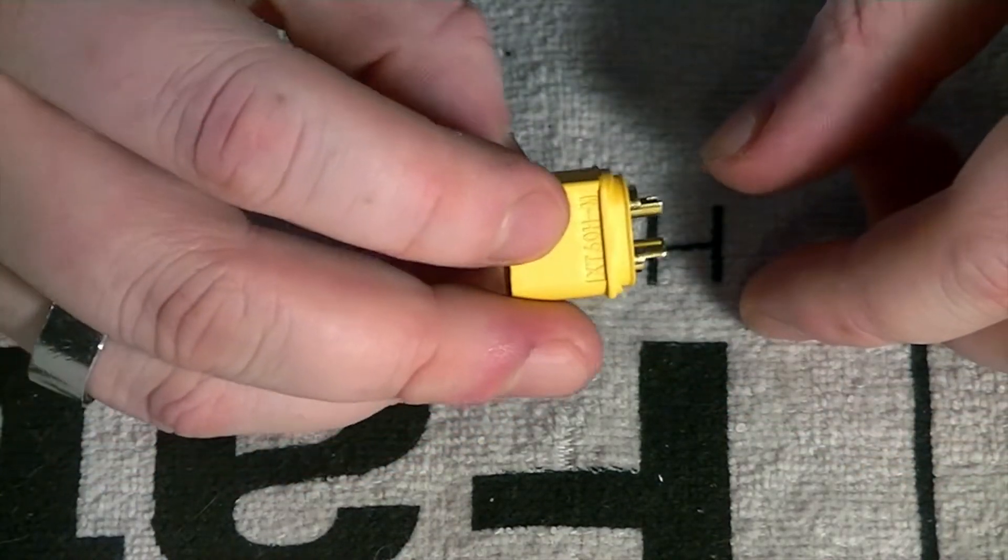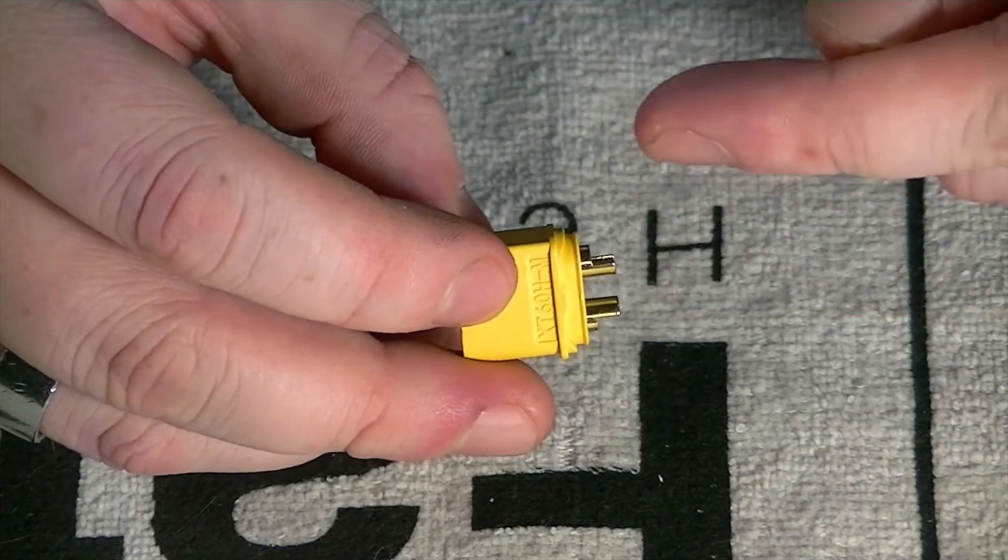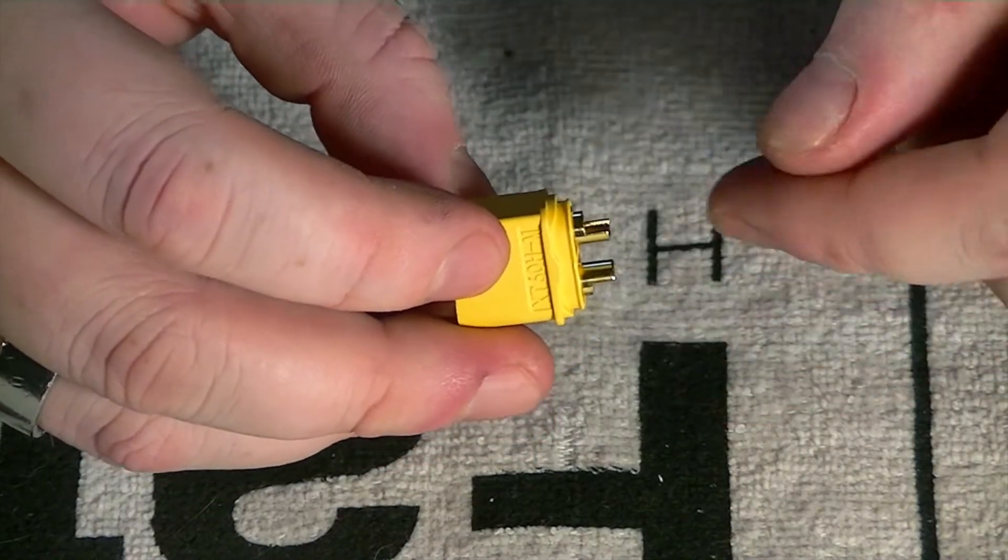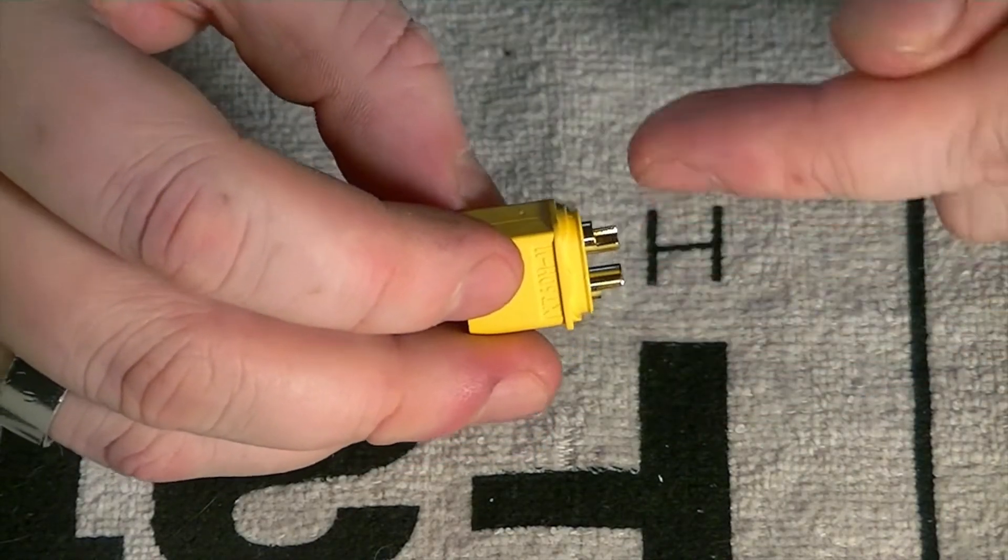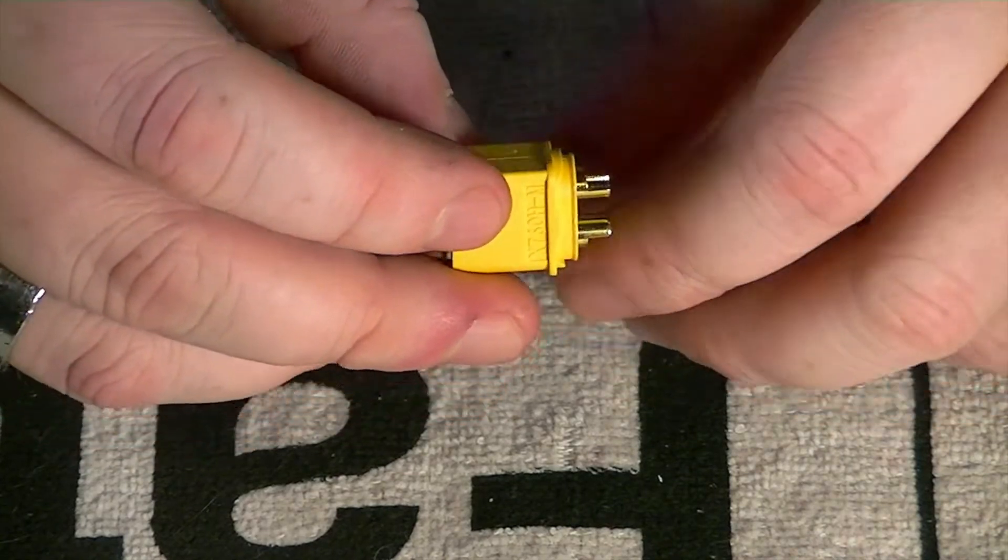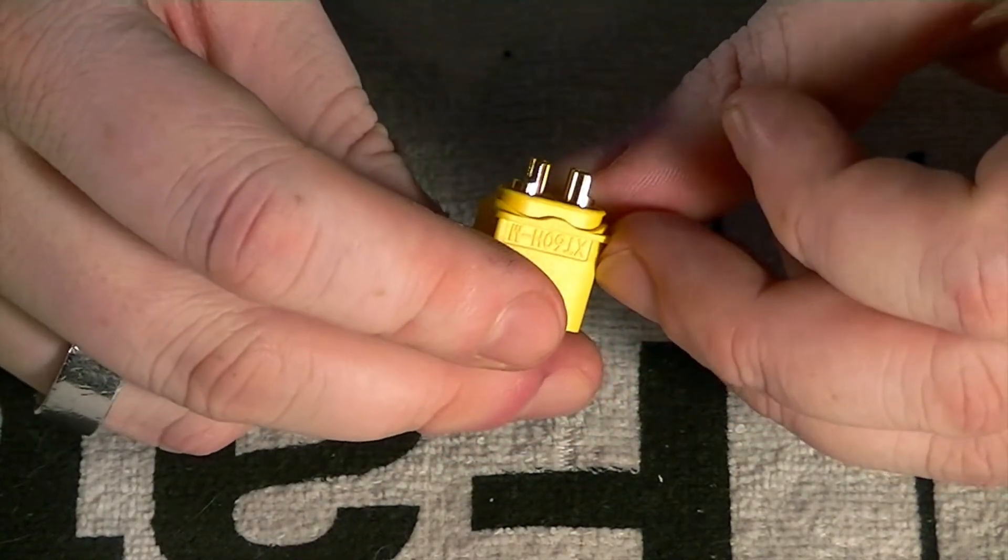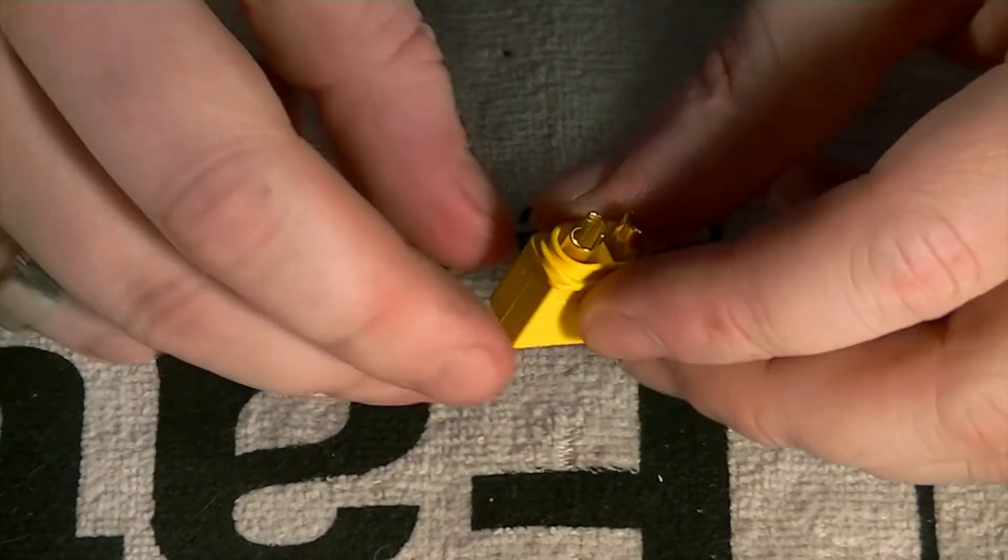And then one thing I do like is the cups are reversed, right? So you've got a cup facing this way and then a cup facing that way. That way you've got a little bit more of a wire separation going on there. Just to kind of keep everything secluded, I really like that.